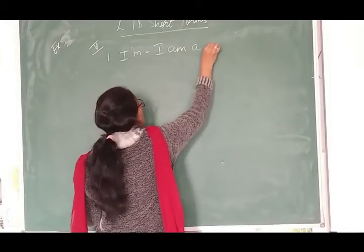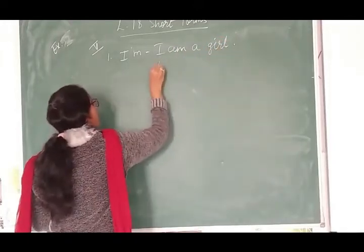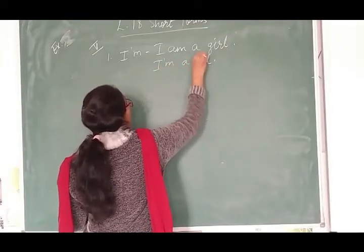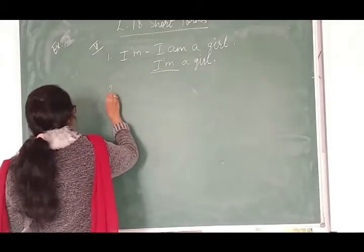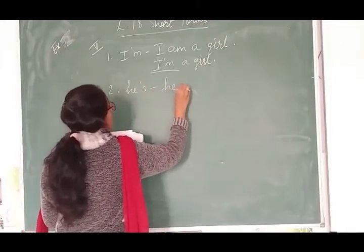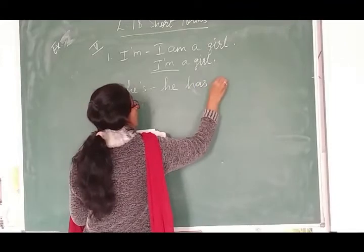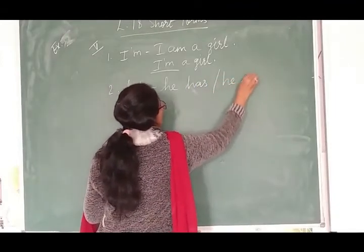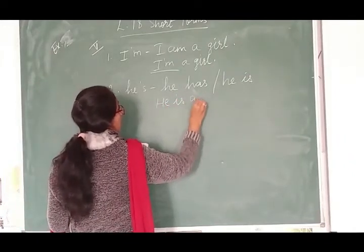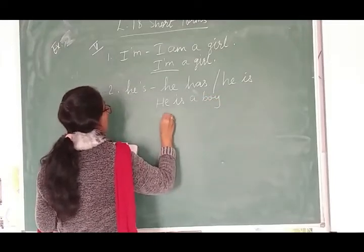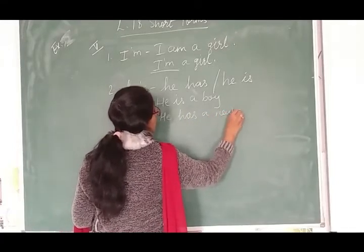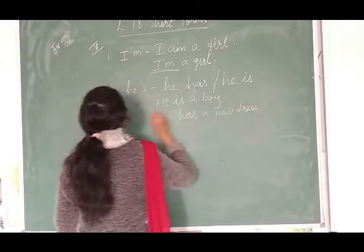And you have to frame the sentence I am a girl, I am a girl. S se bhi likhte ho ya phir aapko short form hi likhna hai. Aur ya phir he is anyhow you can use it okay. Toh he is a boy, he is a boy aise bhi likh sakte ho. He has a pen, he has a new pen ya new dress kuch bhi likh sakte ho okay.